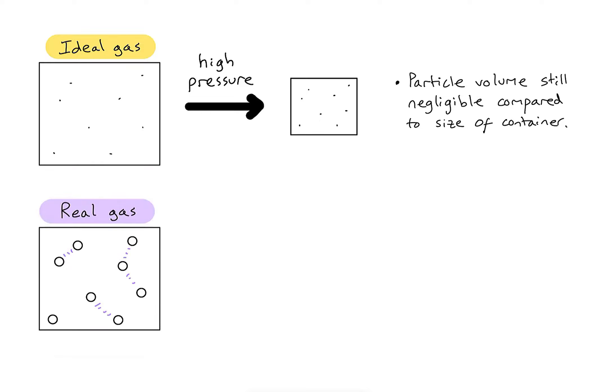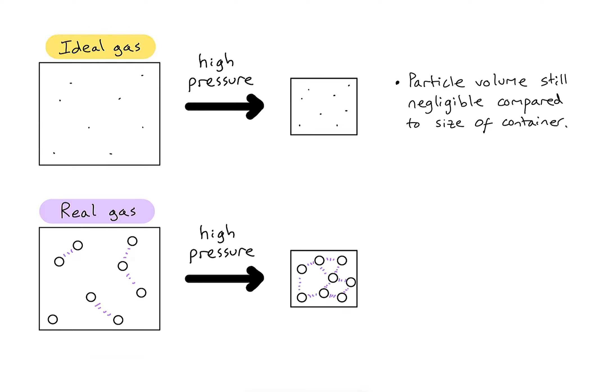Now if I take a real gas and do the same thing — make the box smaller to increase pressure — in the original larger box the particles have volume but aren't taking up much space in the container. When the container is made smaller, their volume actually becomes significant compared to the size of the box. Bunching those particles together in the small box, they might take up perhaps 20, 30, or even 40 percent of the container.